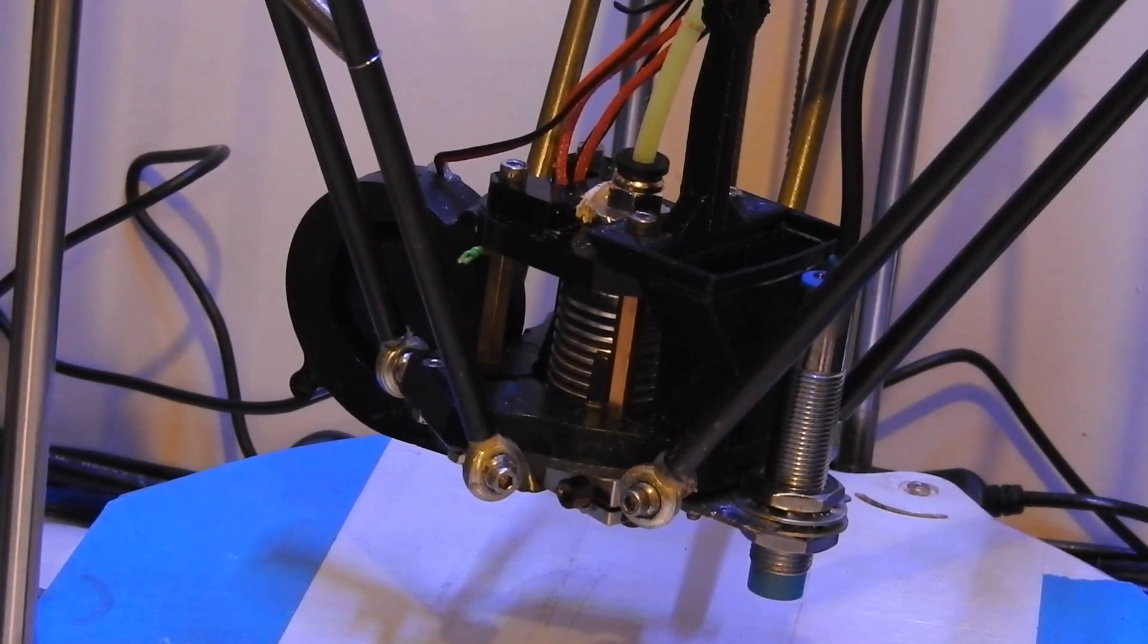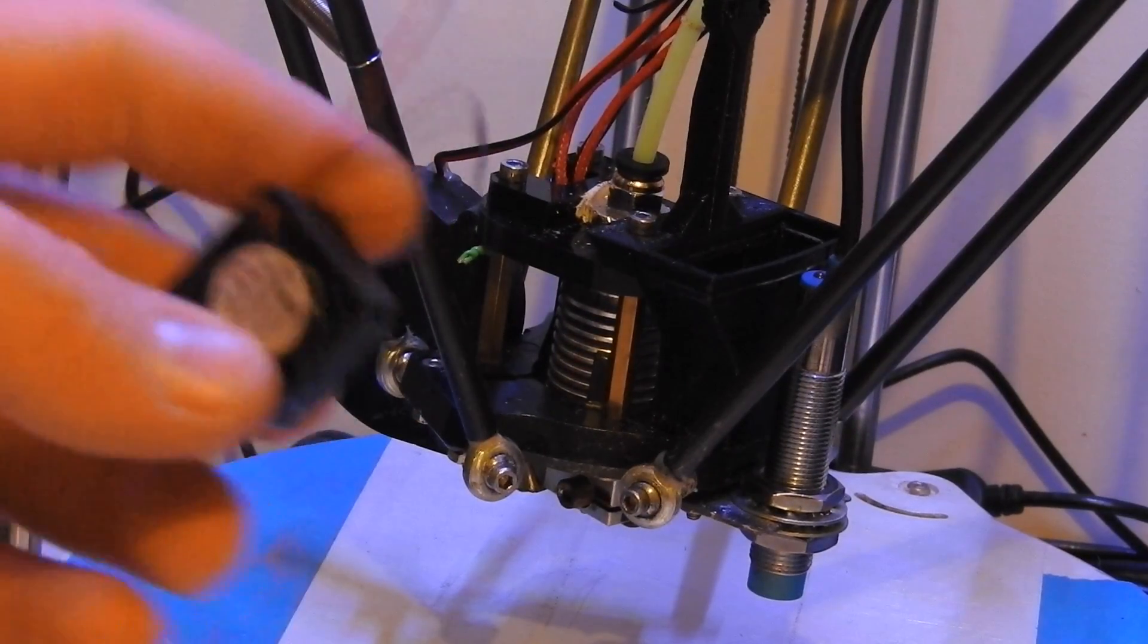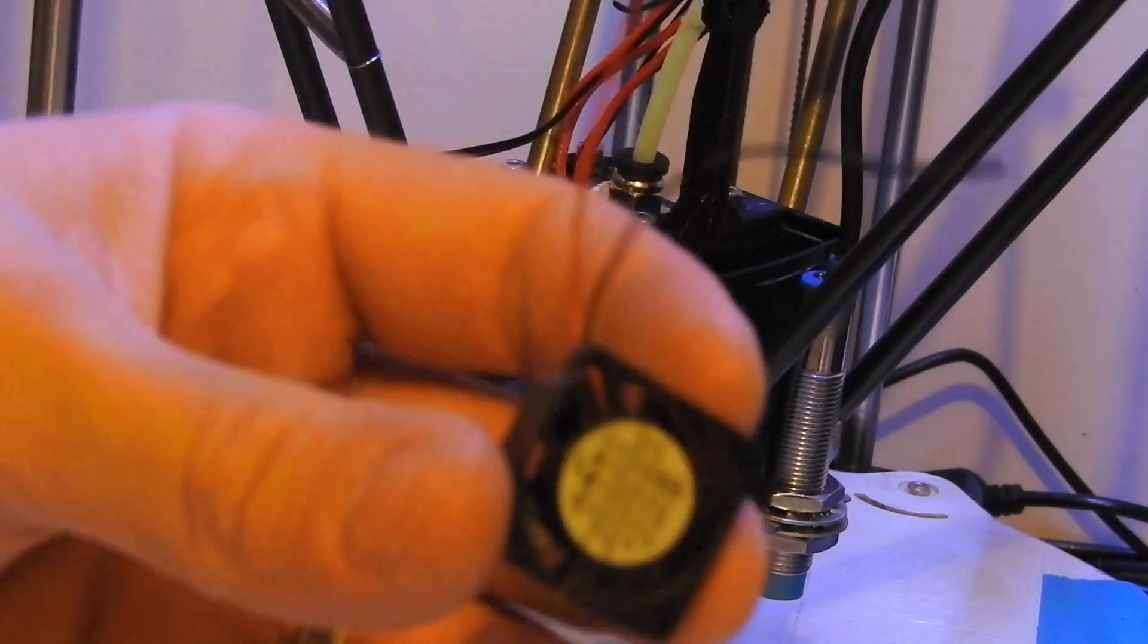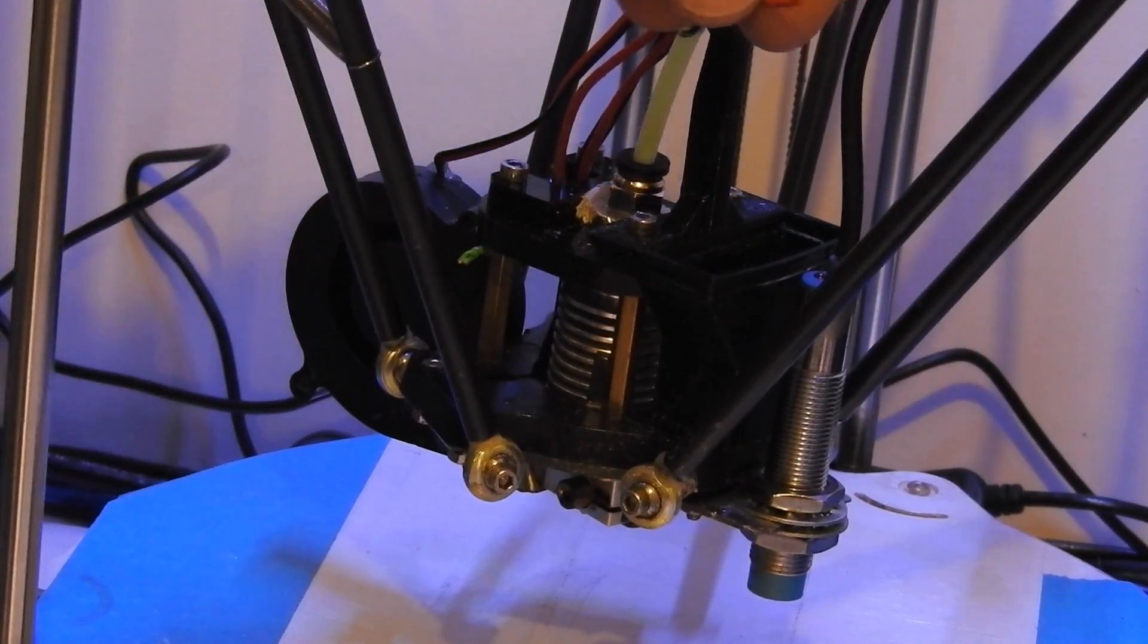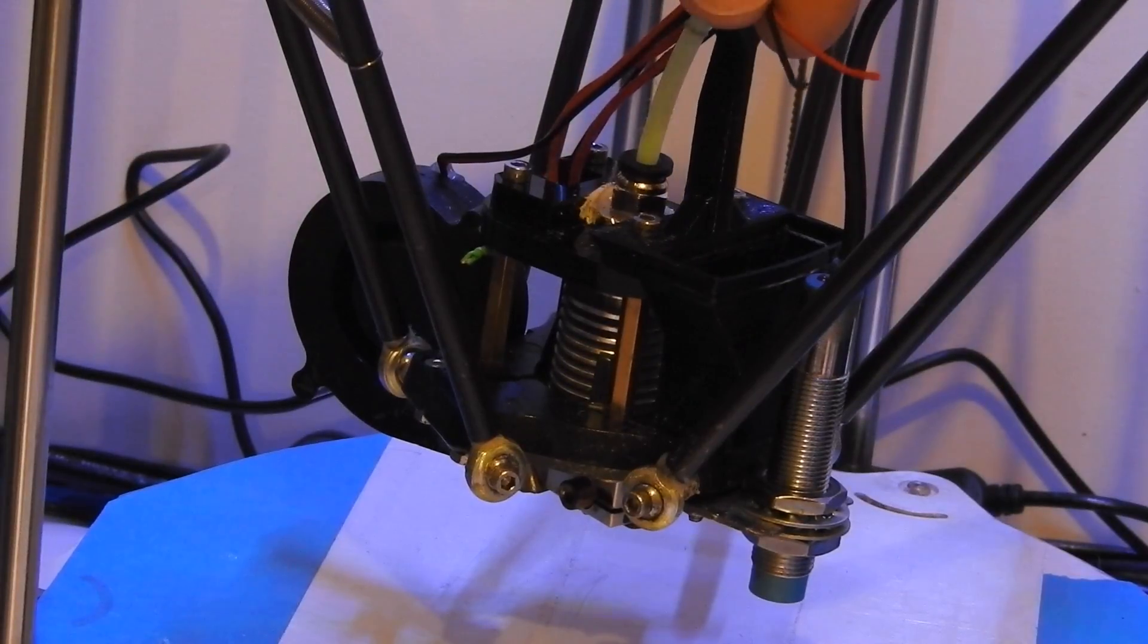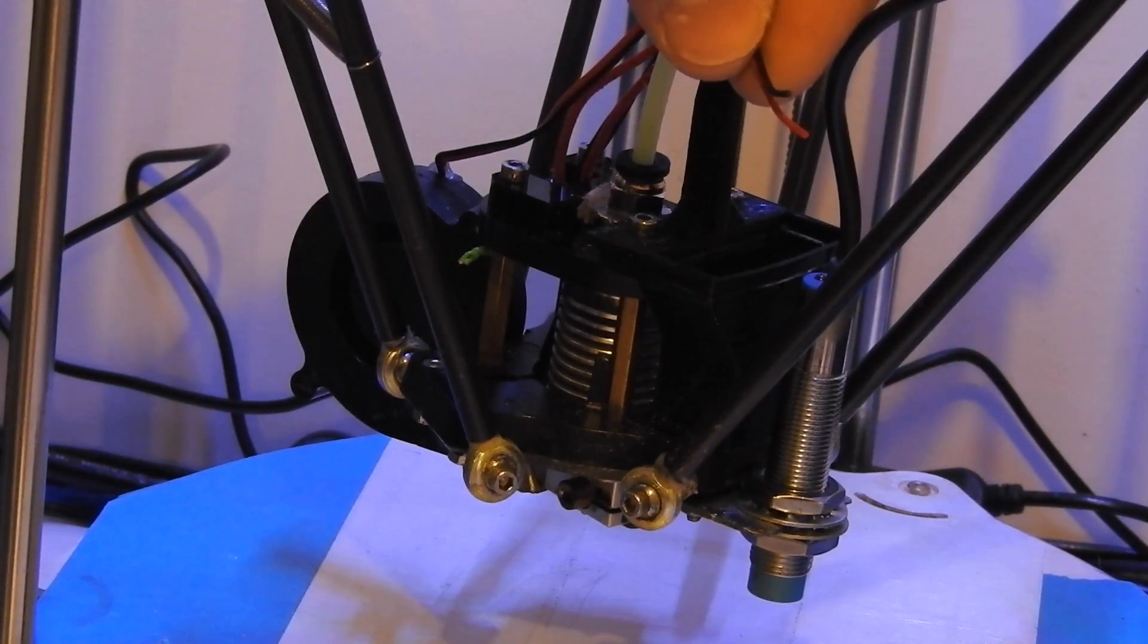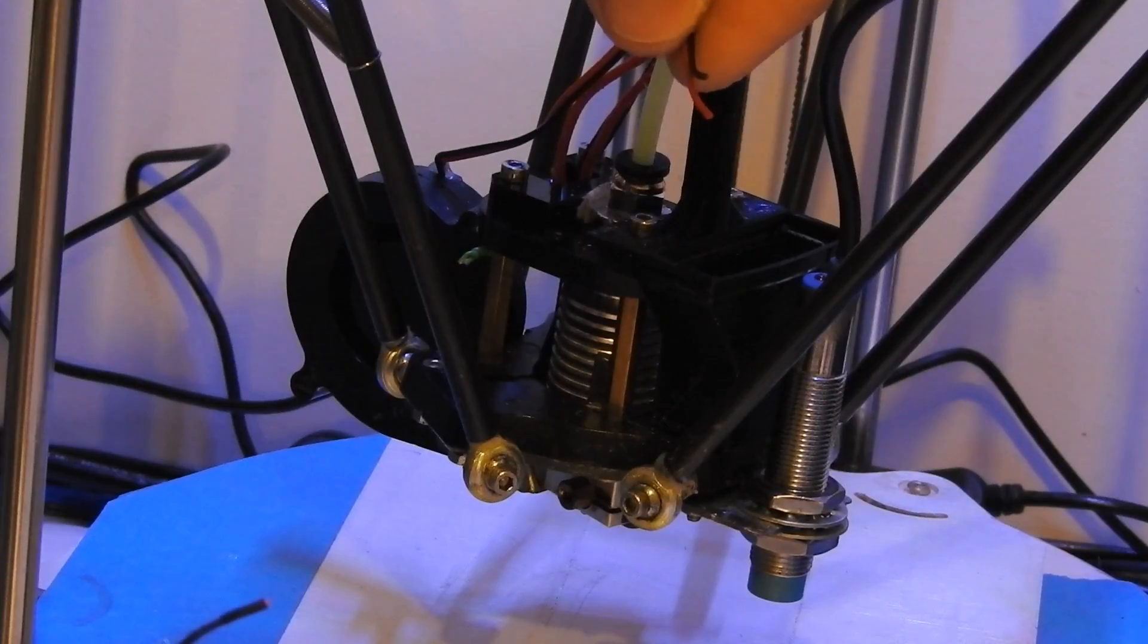Next thing you want to do is remove this little fan which I've already done. Make sure you turn the 3D printer off, disconnect the USB lead, cut those wires just there and then I'll show you how to solder the connectors on.